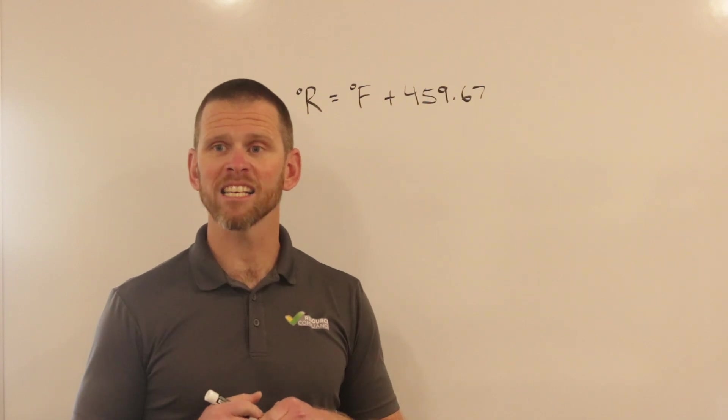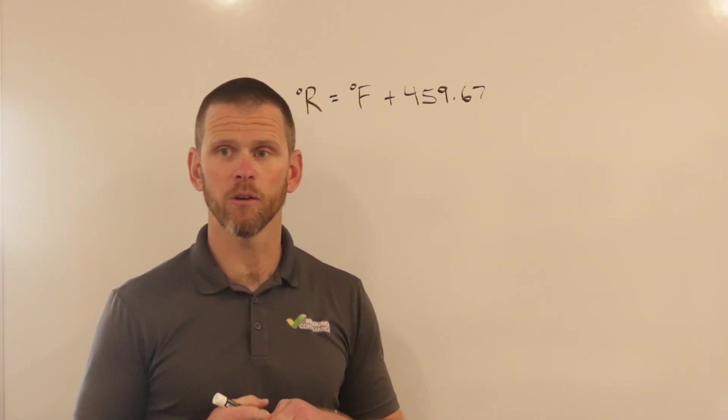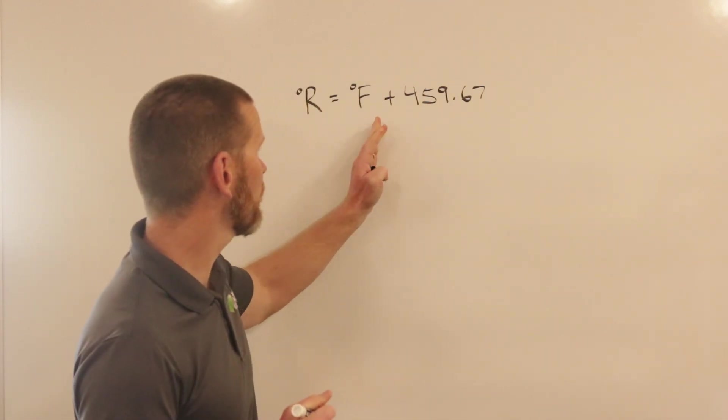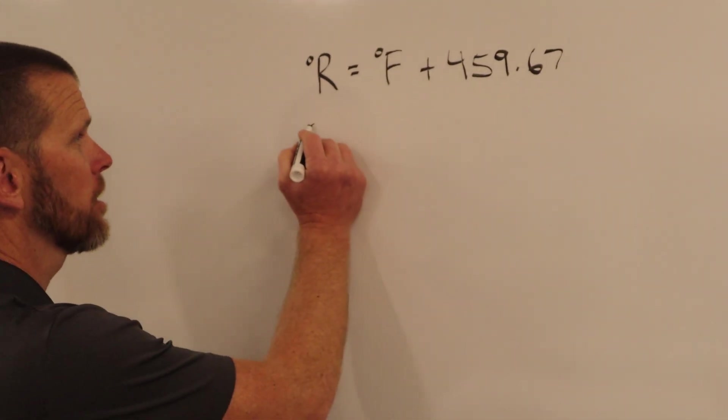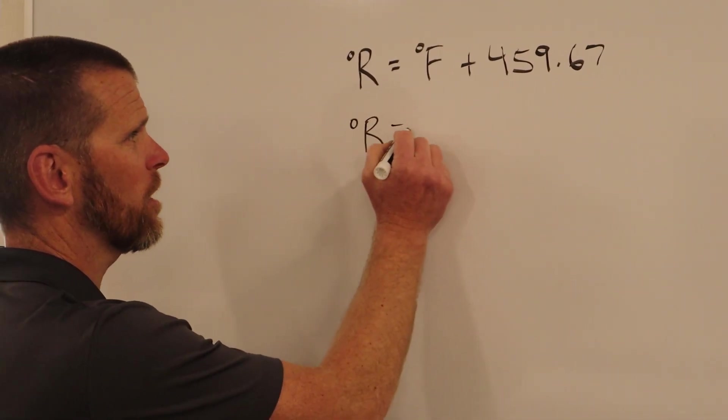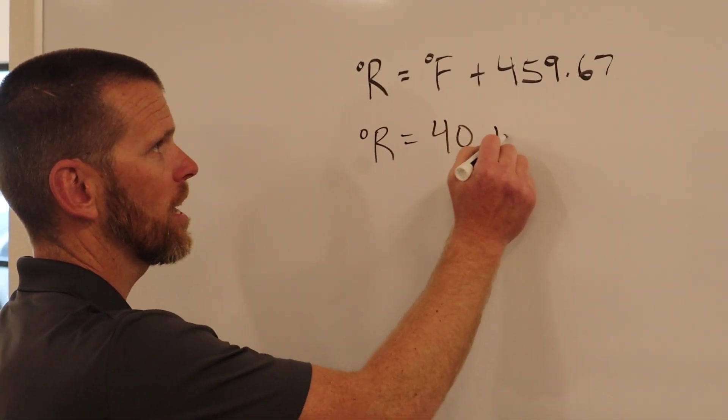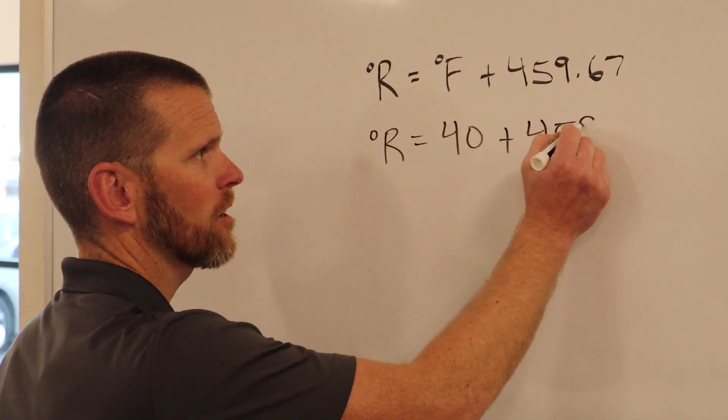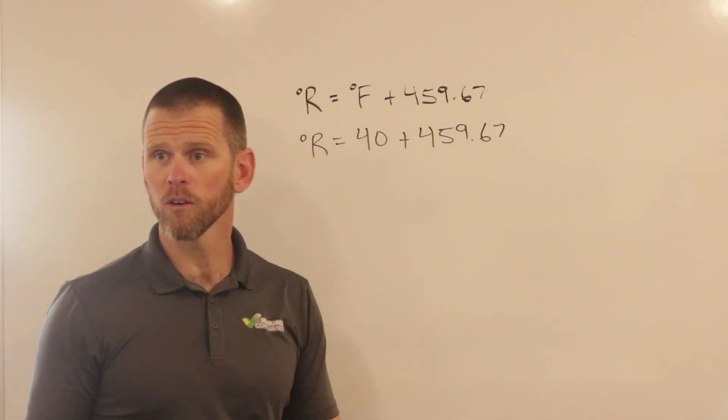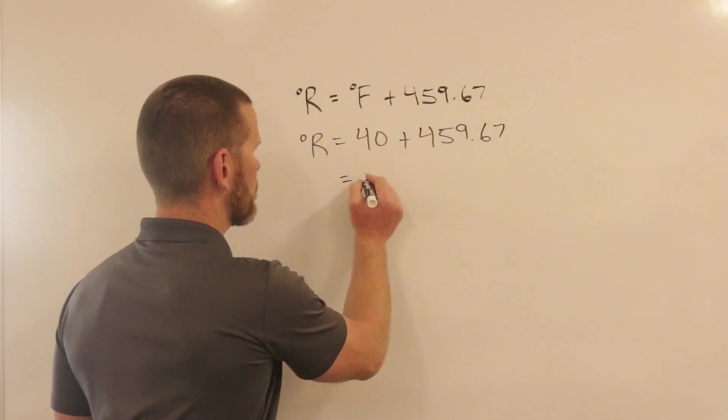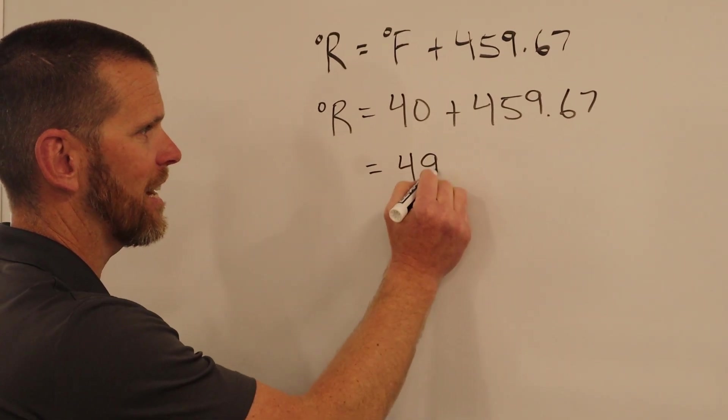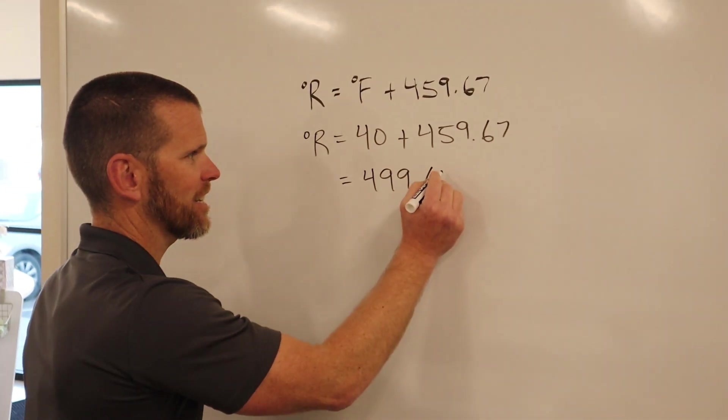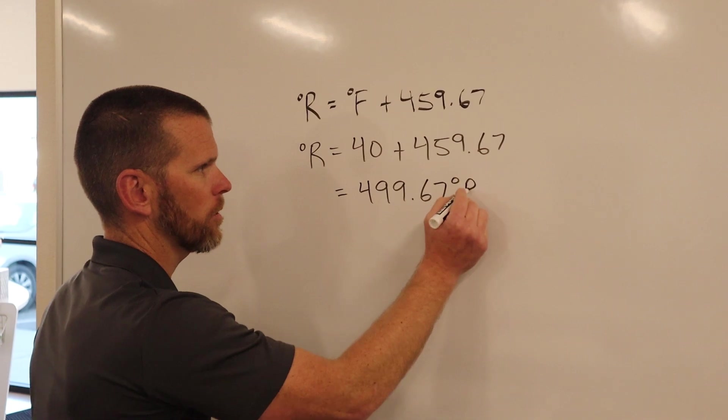In this example, we're asked to convert 40 degrees Fahrenheit into Rankine. So we're just going to simply plug 40 into our equation here. Degrees Rankine will equal 40 plus 459.67. Probably don't even need a calculator for this one. Your answer is 499.67 degrees Rankine.